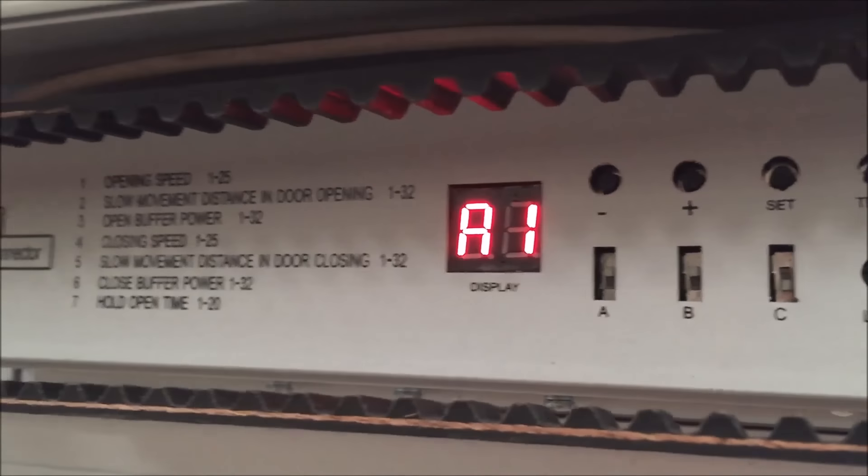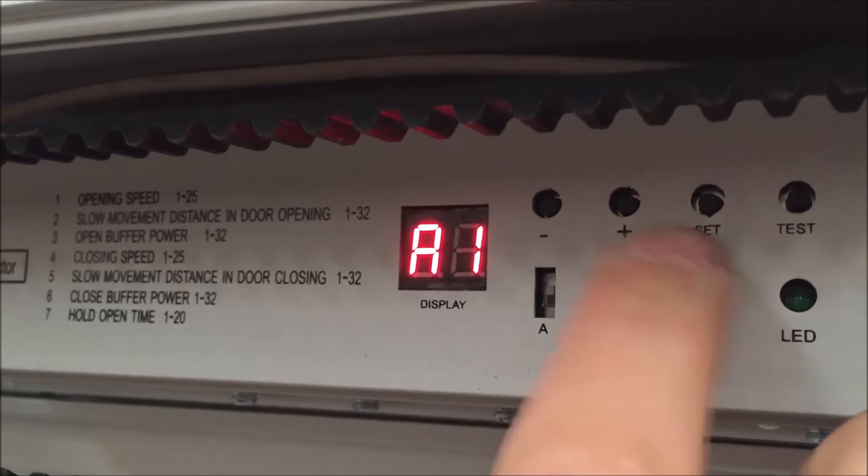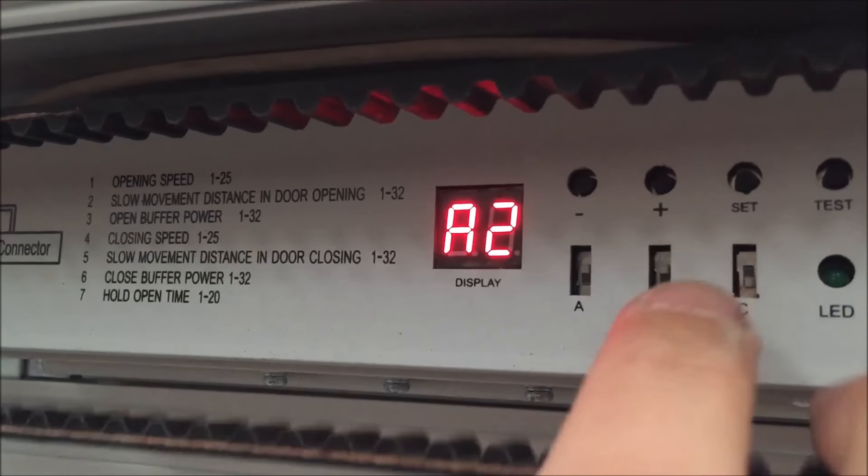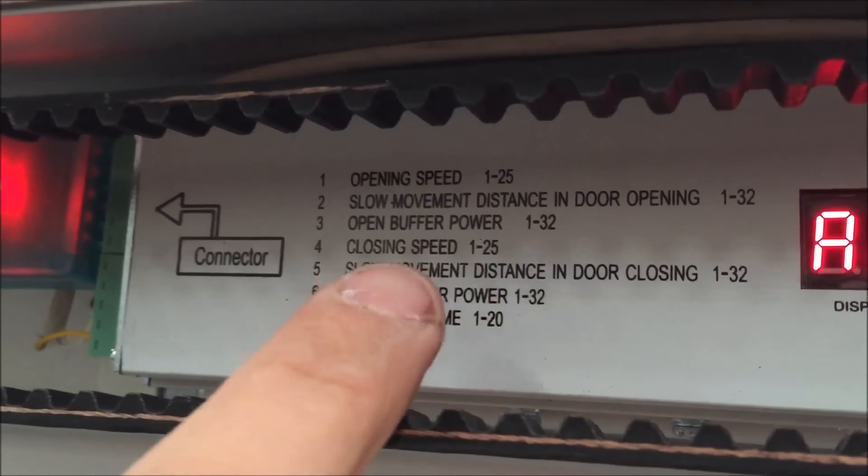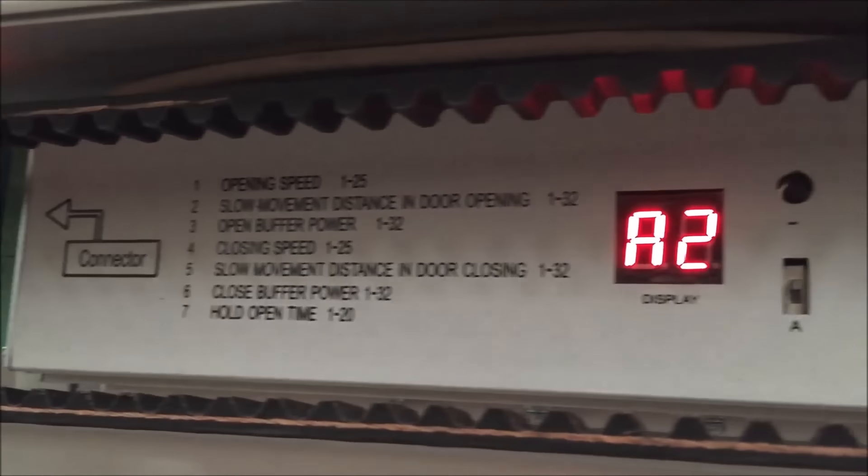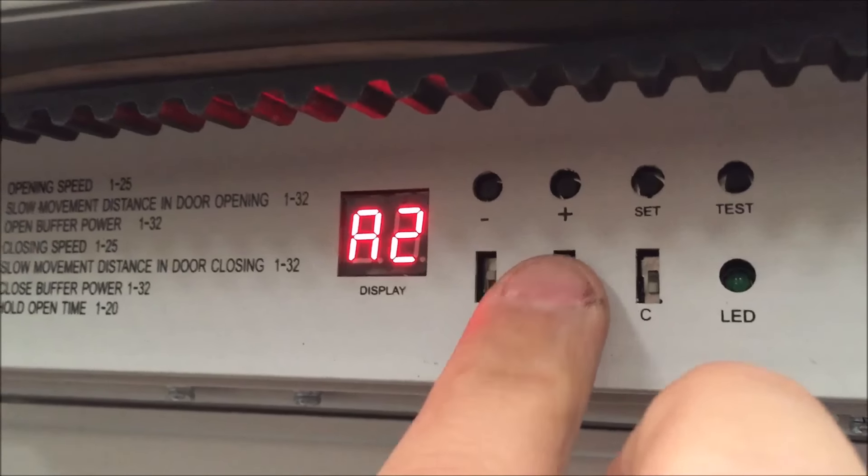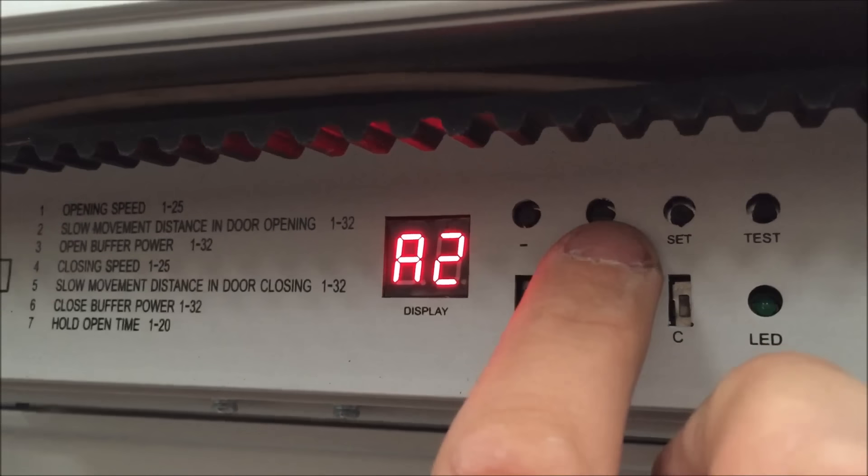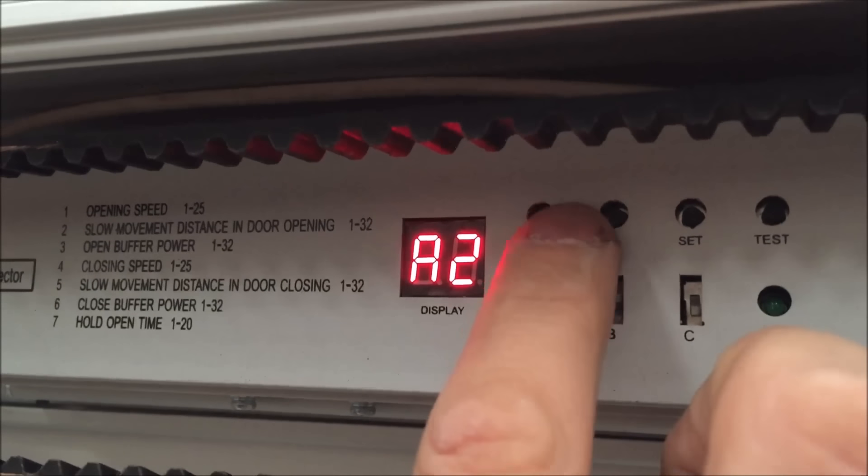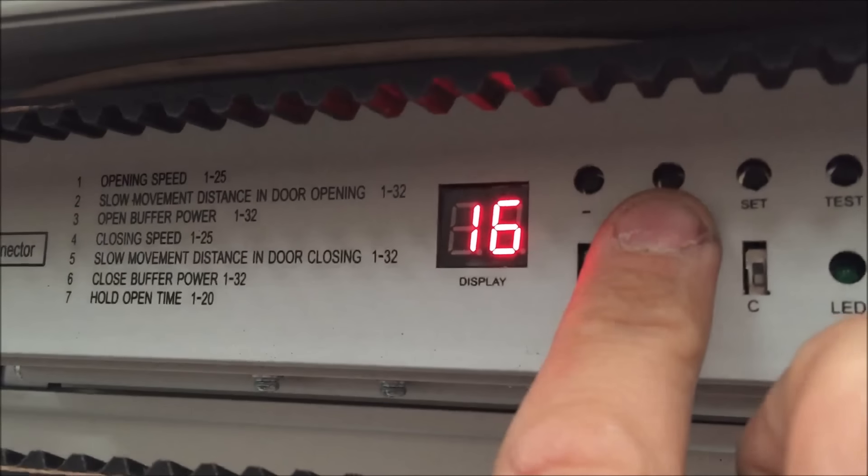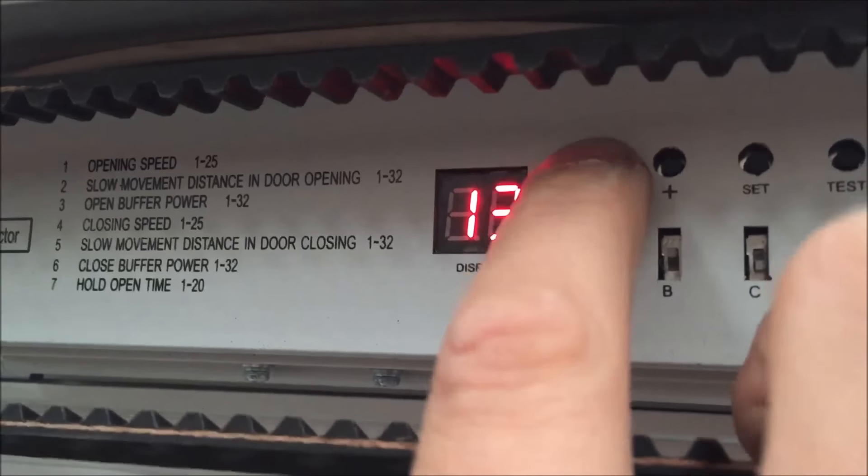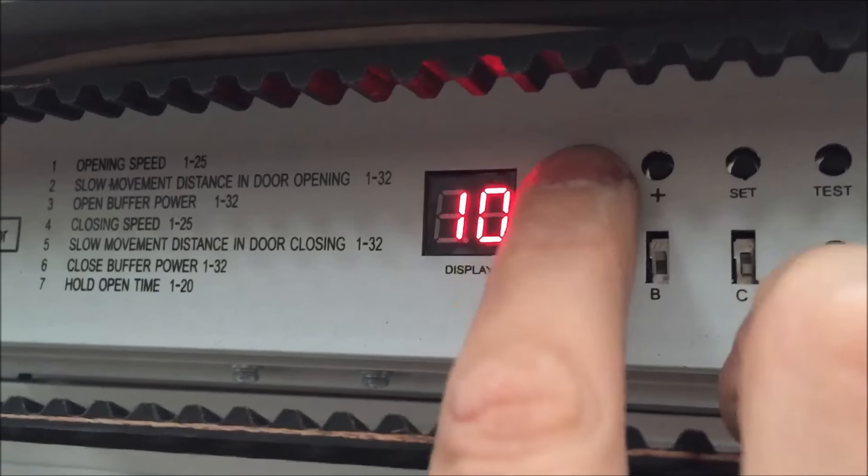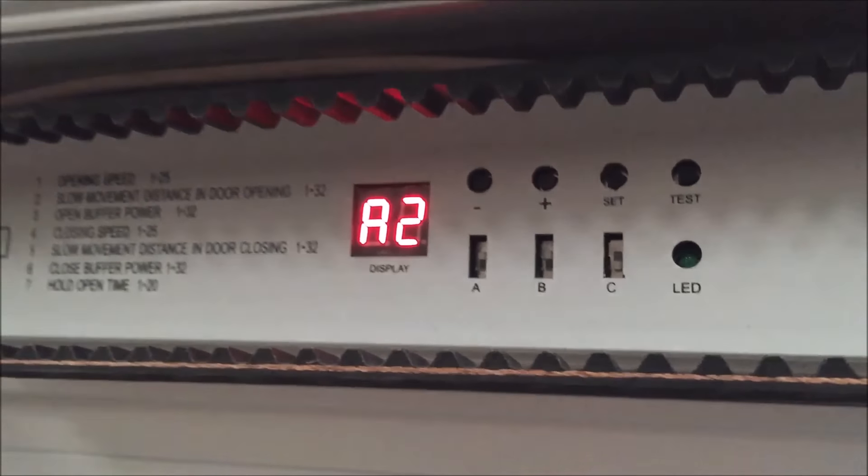Para irnos al menú 2 volvemos a pulsar la tecla set y nos vamos a este menú 2 donde aquí podemos cambiar la distancia del movimiento lento en la apertura de la puerta. Para modificarlo lo mismo pulsamos el botón más o el botón menos para modificar el valor. En este caso vemos que tiene el 16 y lo vamos a reducir también hasta el número 10 por ejemplo. Y lo dejamos un poco para confirmarlo.